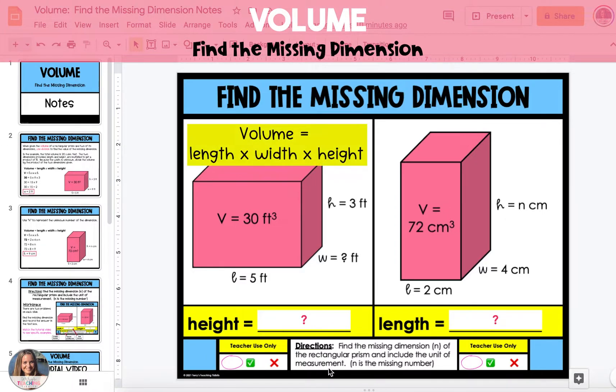Because volume is found by multiplying length times width times height, if you're provided with the volume and you're missing one of the three dimensions, take the total volume and divide it by the product of the dimensions.